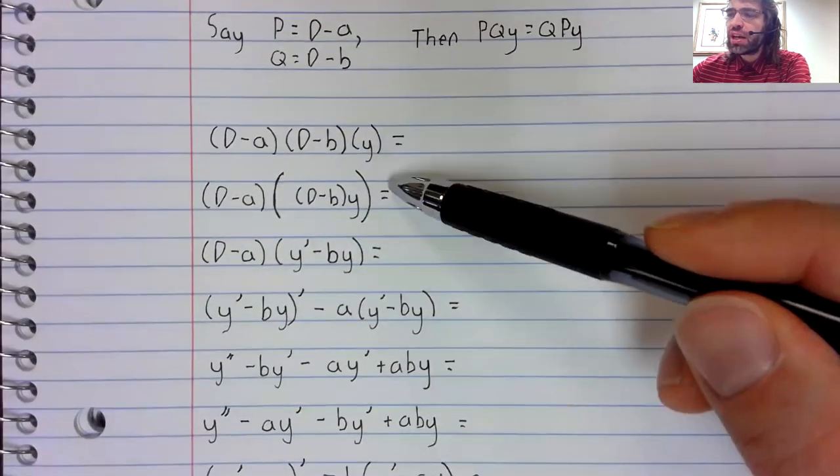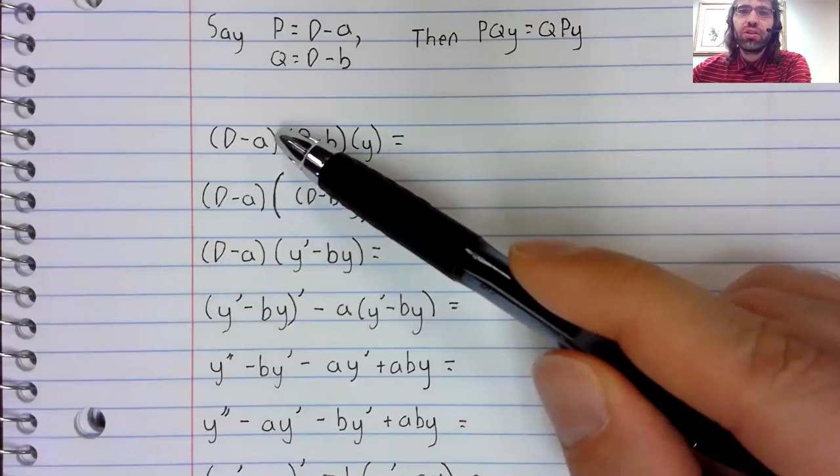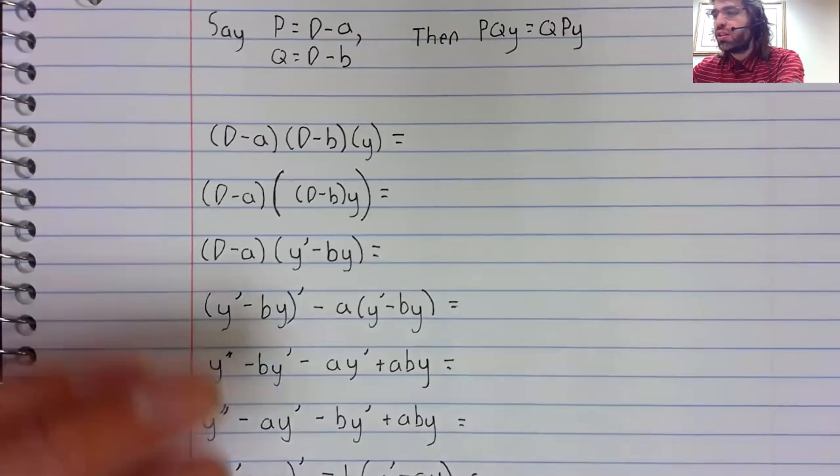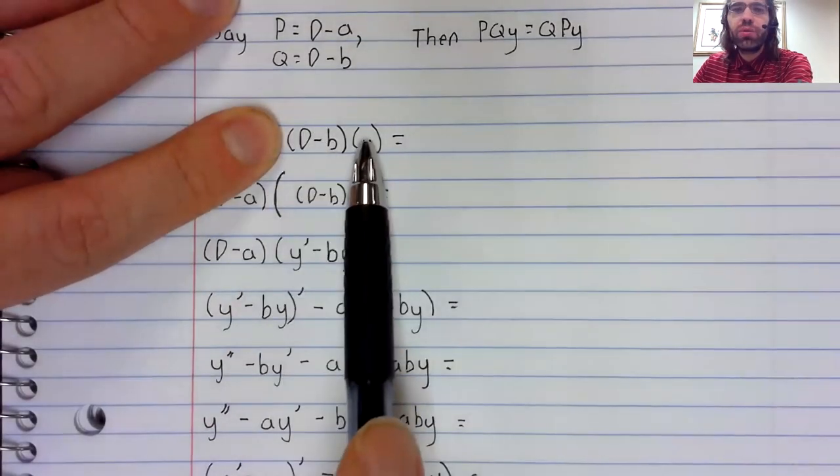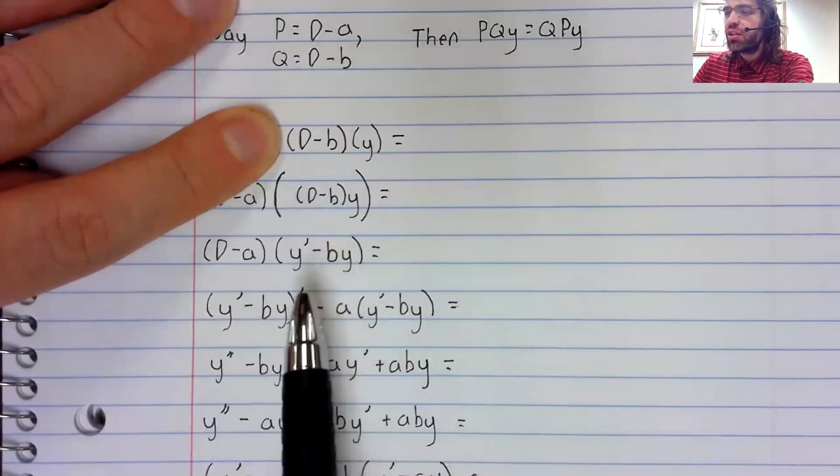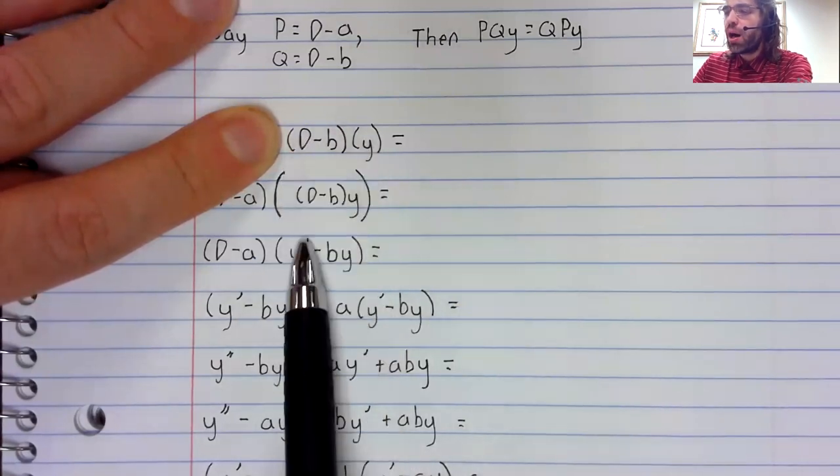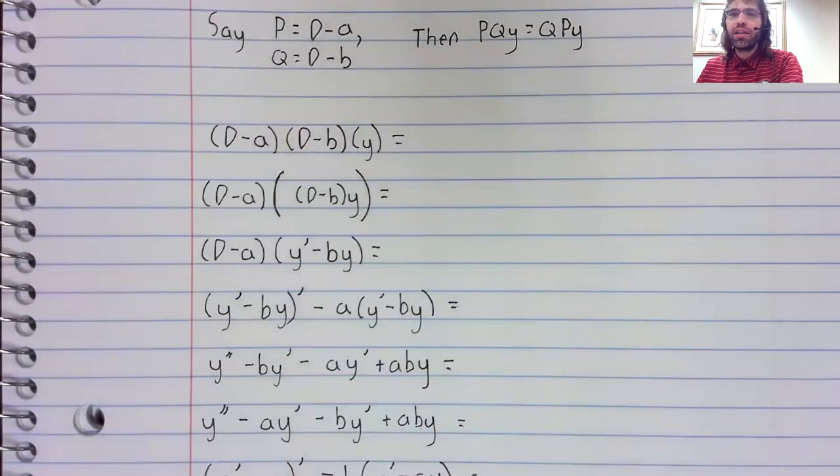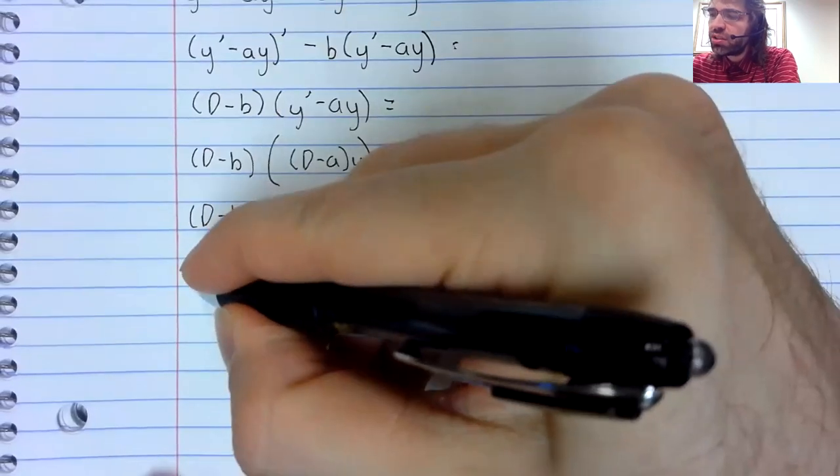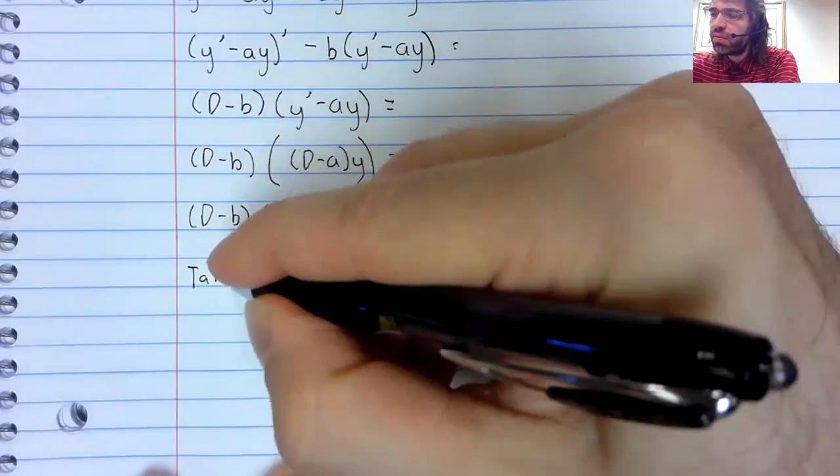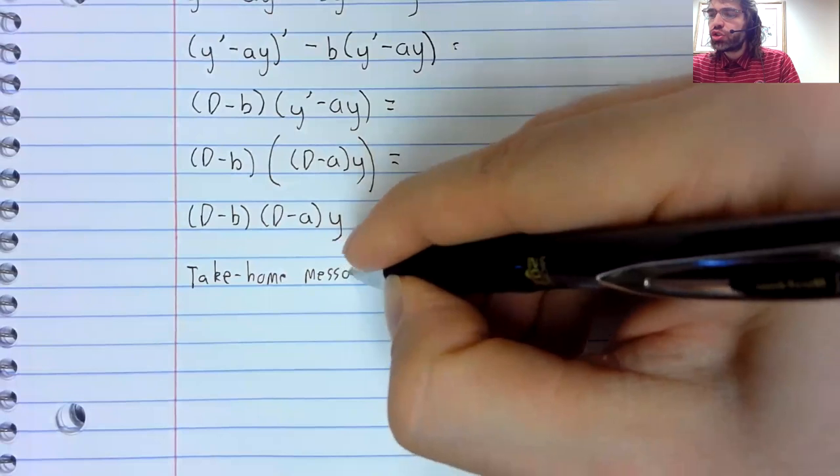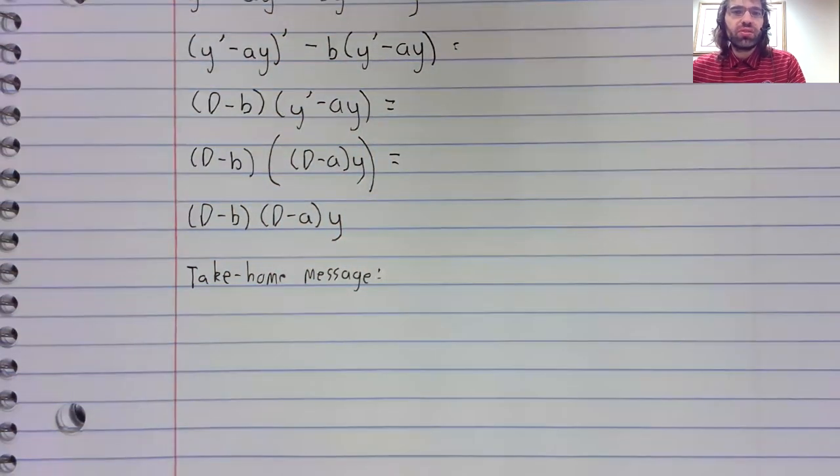But you see that it did act like multiplication. Like all of these steps, this composition that looked like multiplication acted like multiplication. This d minus b applied to y, not multiplication, but it behaves like multiplication. It's d y minus b y, and so on.